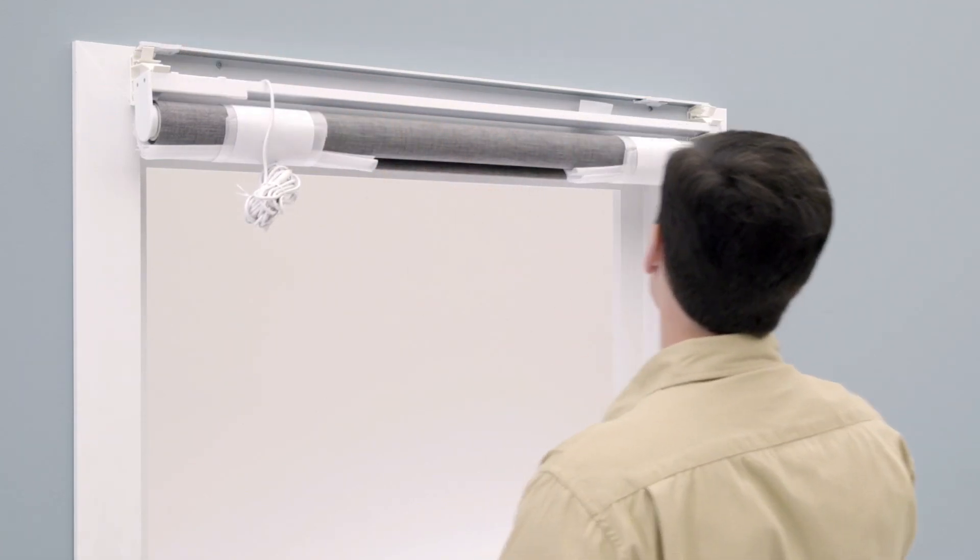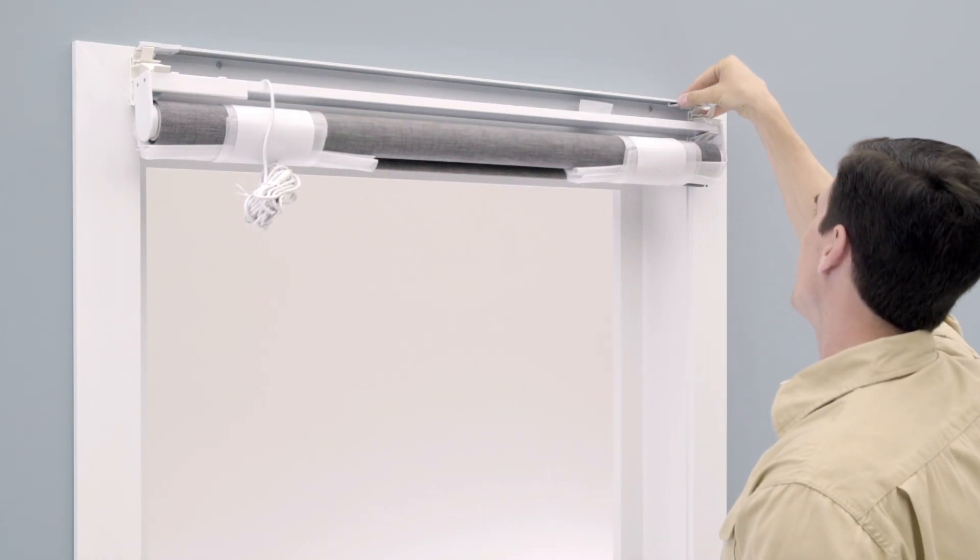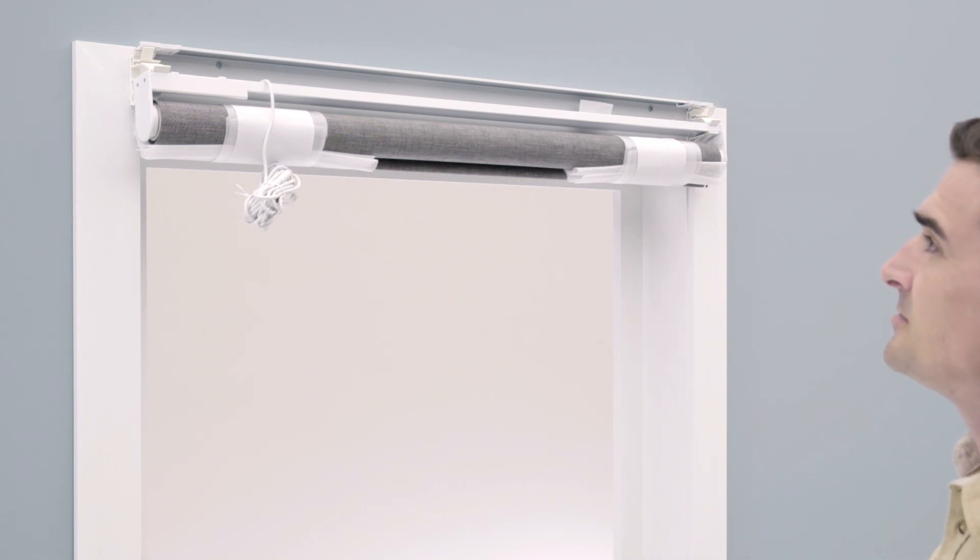Once the shade is attached, slide the left and right bracket locks to each end of the mounting rail until they click lightly, securing the shade support bracket to the mounting rail.